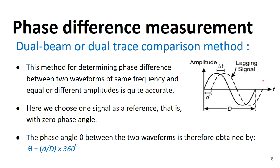The phase angle theta between the two waveforms can be calculated using the relation: theta = (d / D) × 360 degrees. Here, capital D is the horizontal distance required for one full cycle of either waveform, and small d is the horizontal distance between corresponding positive slopes of the two waveforms, as shown in the figure. This ratio, multiplied by 360 degrees, gives the phase angle theta between the two waveforms.